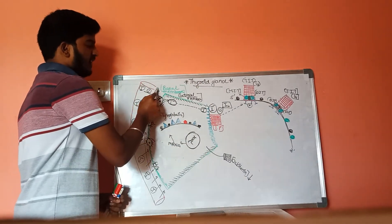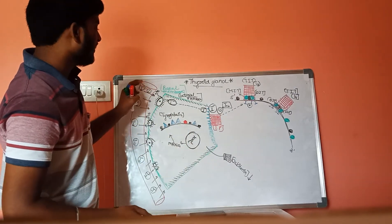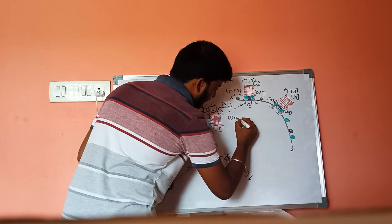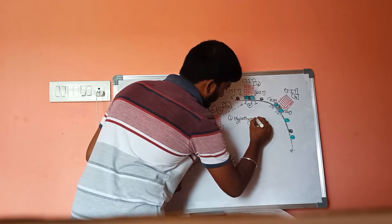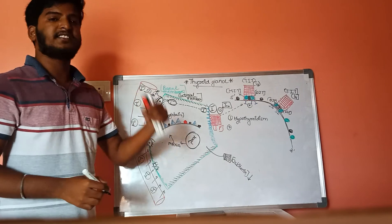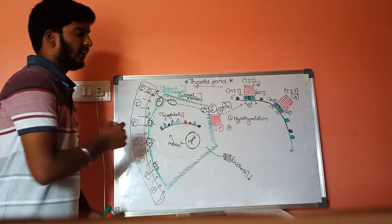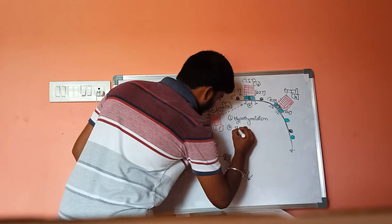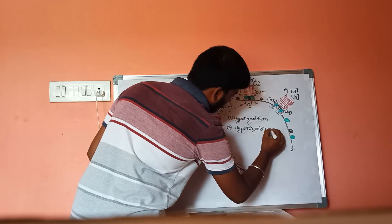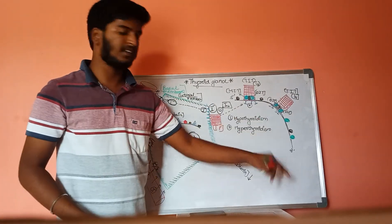There are two disorders related to this thyroid gland. If the intake of iodide molecules is lesser, then it is called hypothyroidism. If there are excess amounts of iodide molecules taken up by the thyrocytes and there is excess production of T3, T4, and calcitonin, it is called hyperthyroidism. These are the two conditions related to this thyroid gland.